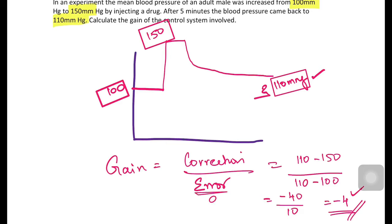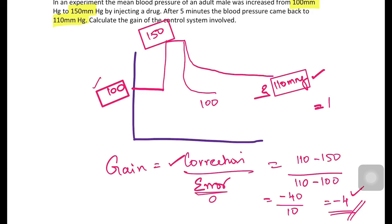For example, if the blood pressure went to 150 and came back all the way to 100, the correction would be 50 and the error would be zero. If error is zero, the formula gives infinity — a completely error-free control system has a gain of minus infinity.